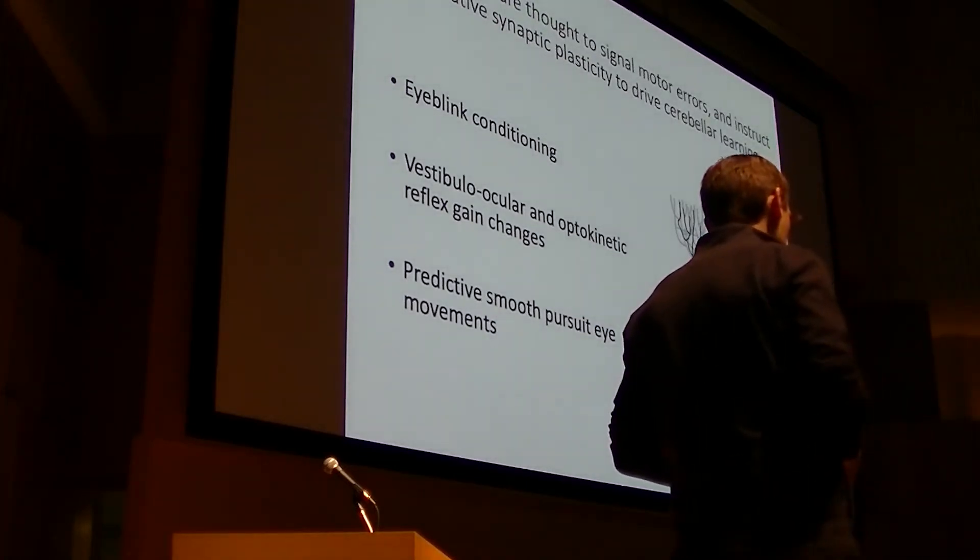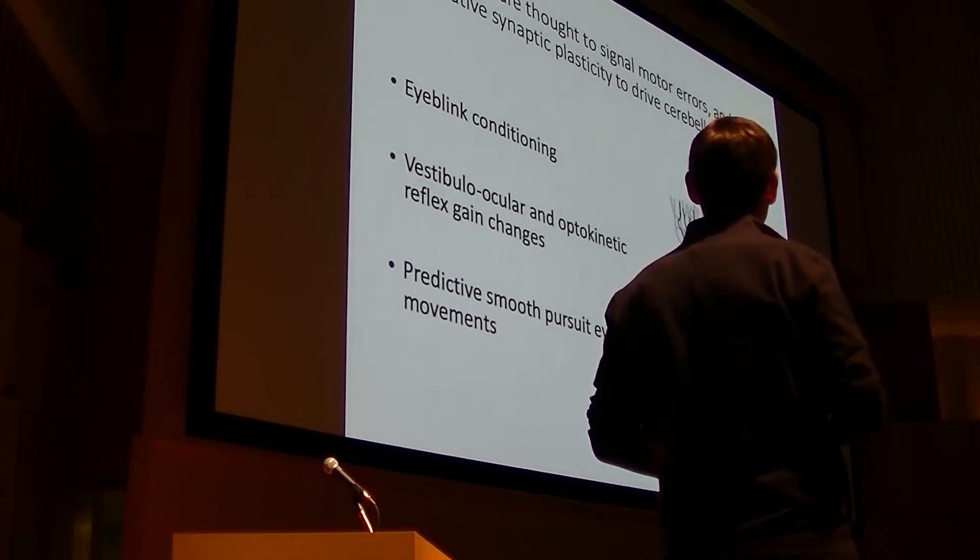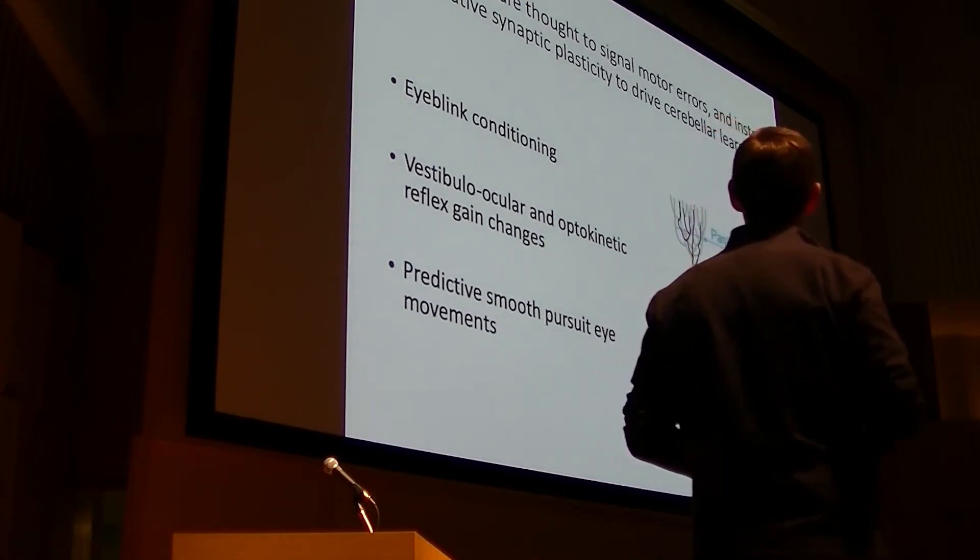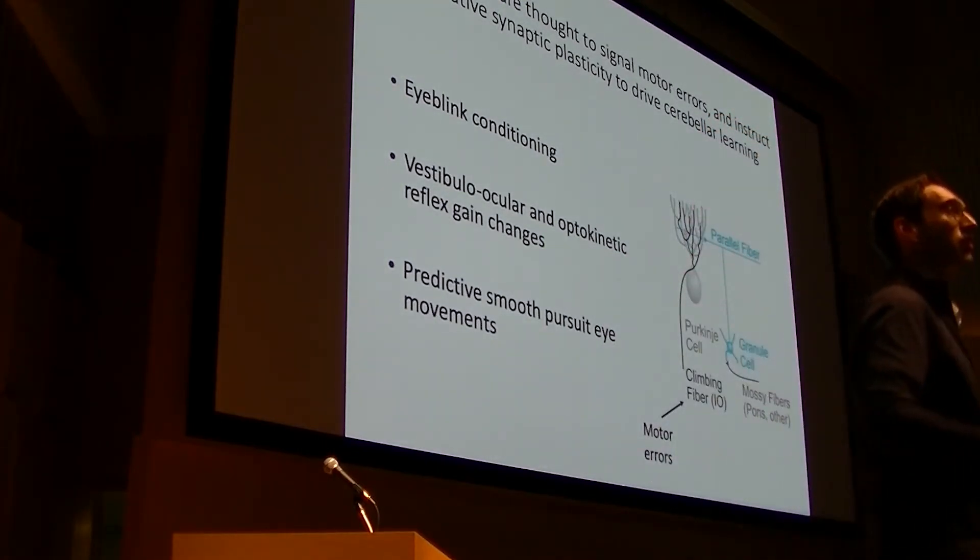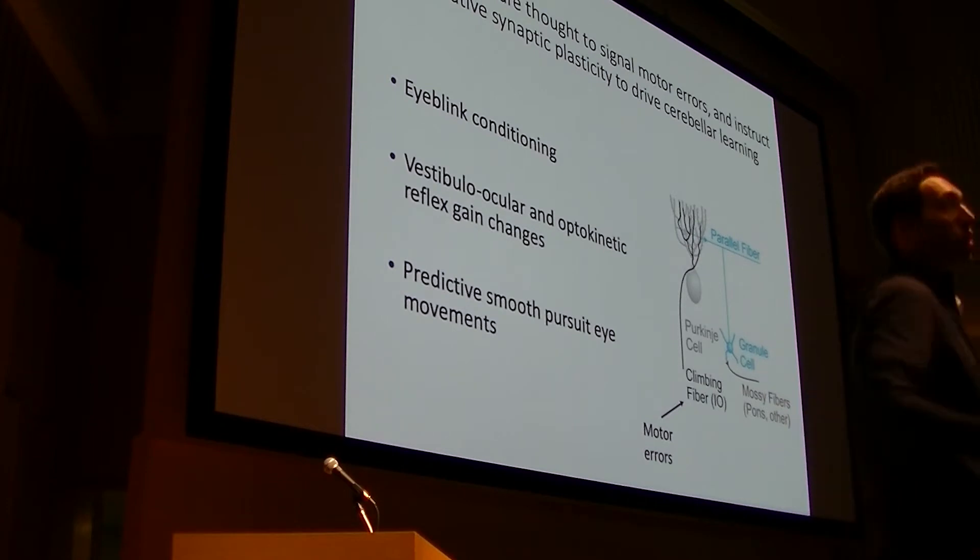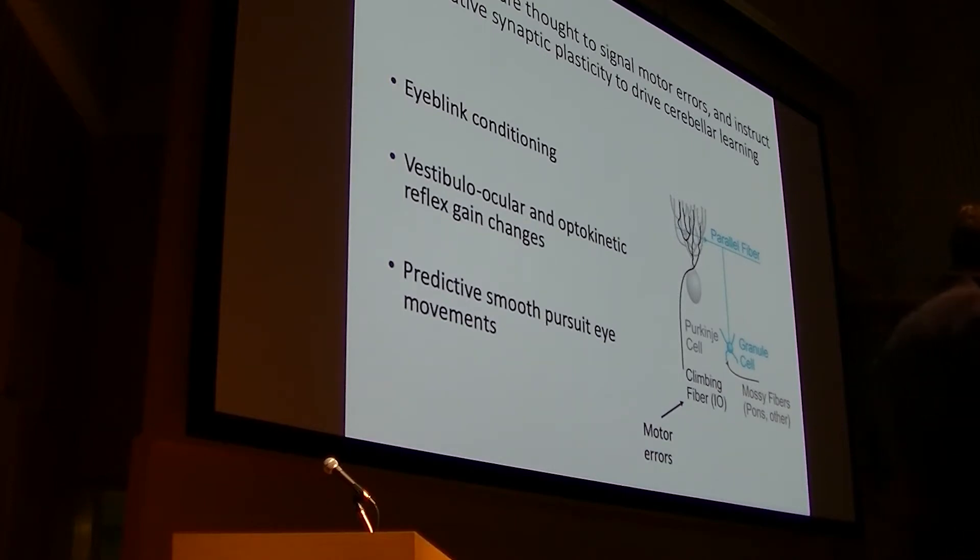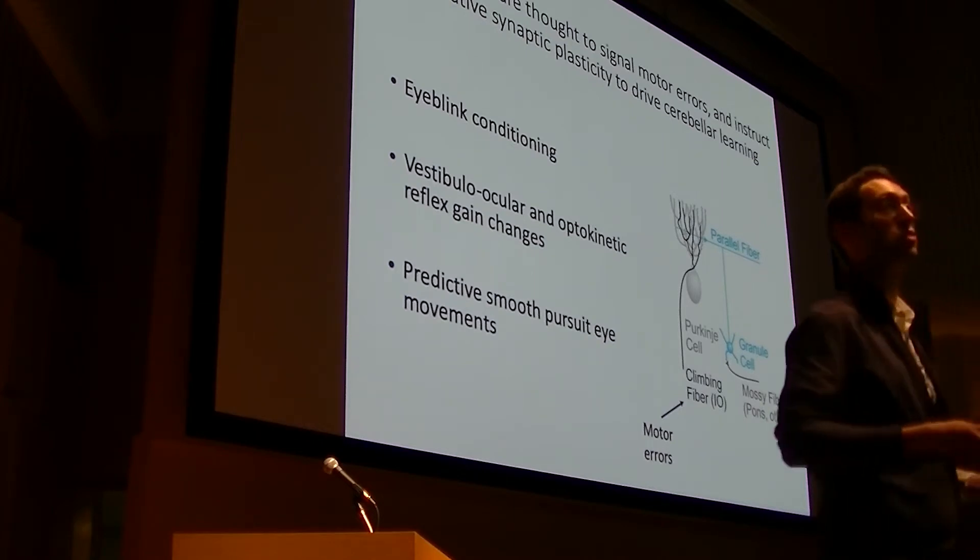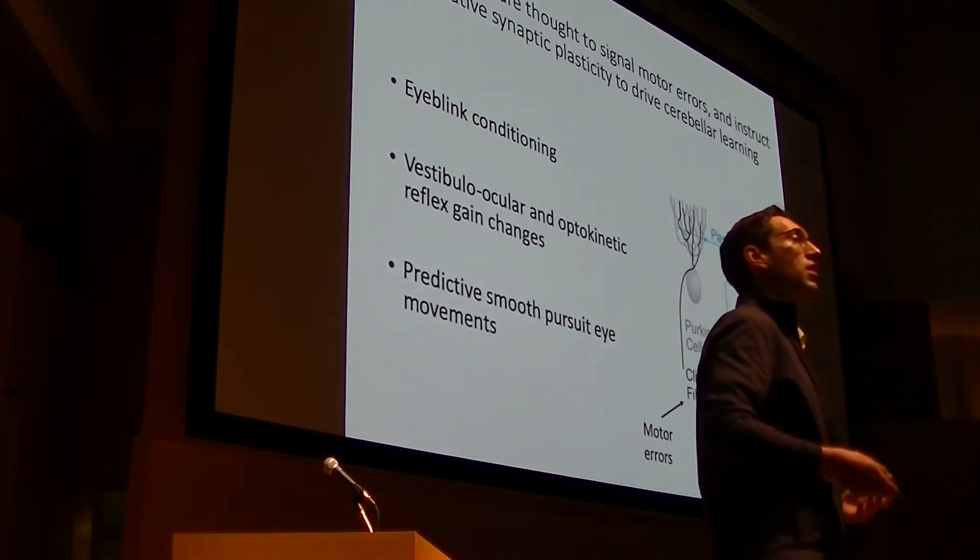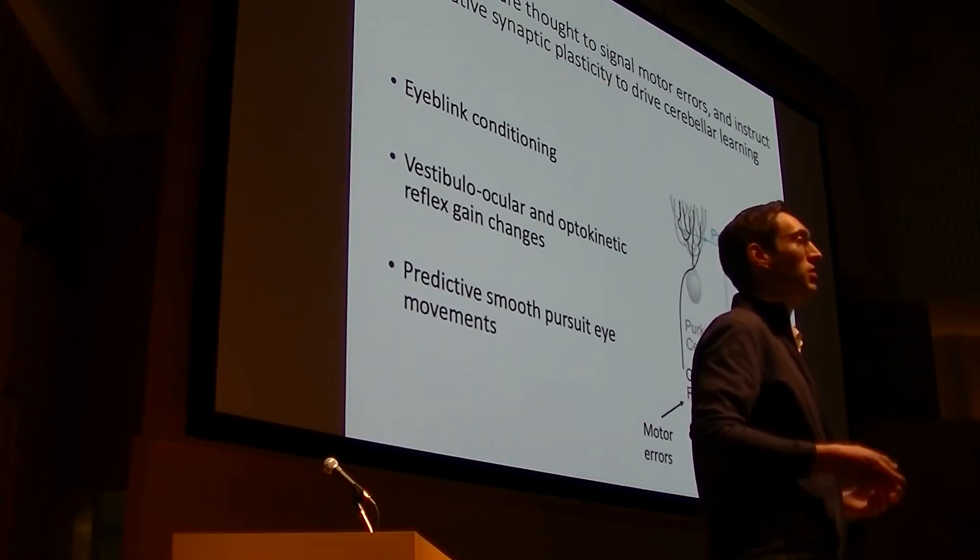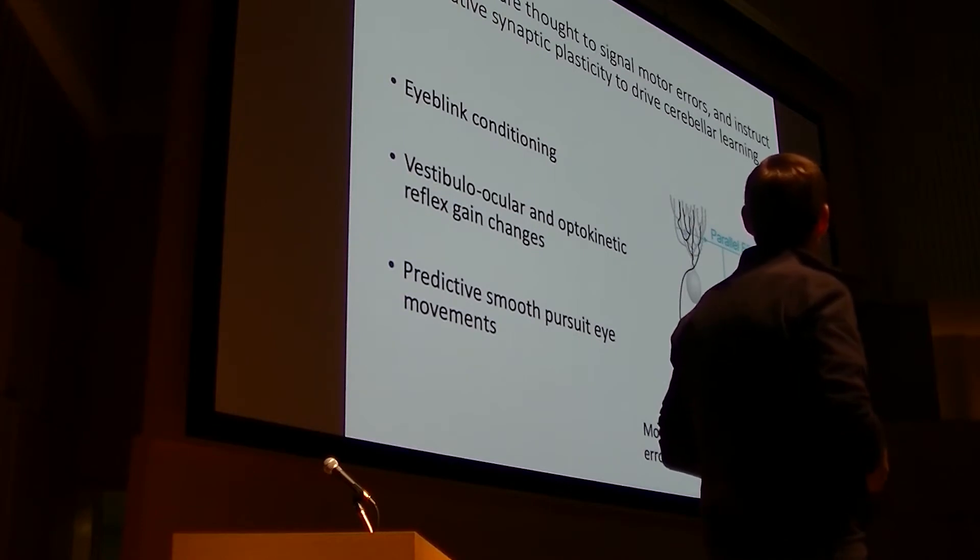But it's clear that this error-signaling model, as well as it can describe the neural data in these kinds of behaviors, we also know that the cerebellum likely contributes to learning that is not guided by motor errors. And in fact, it might be guided by predictions about upcoming reward. We also know that the cerebellum connects to downstream structures such as the VTA and the striatum that are involved in reward-based learning. And so our question really is: